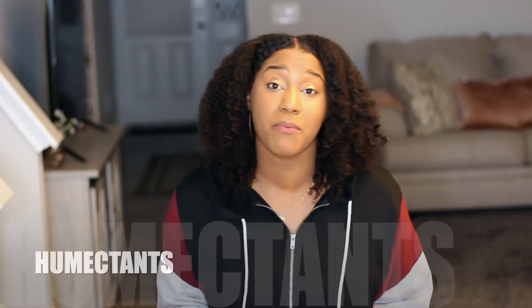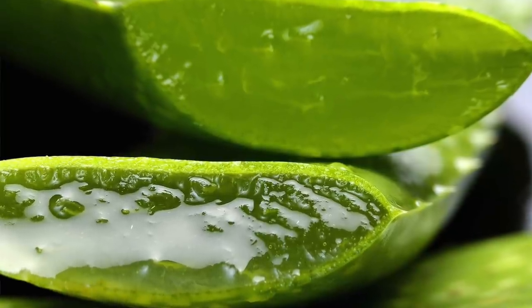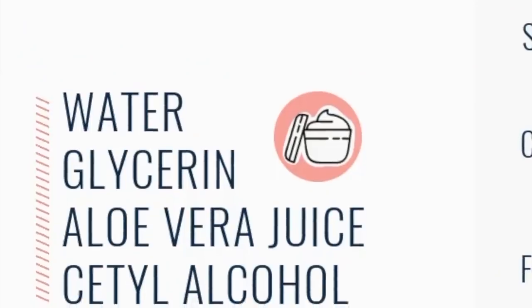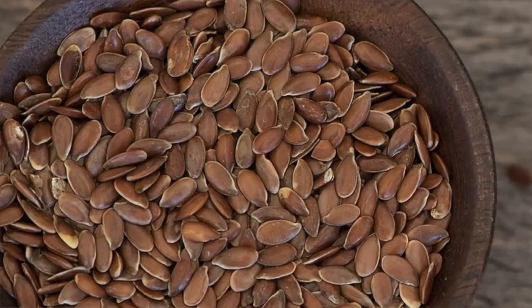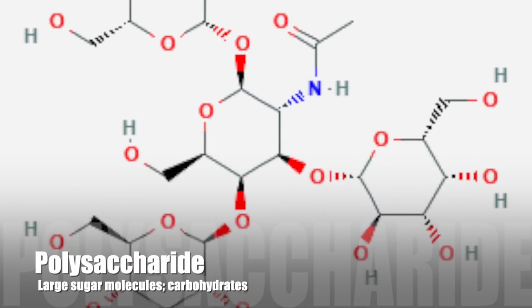Number two: consider using humectants in your regimen, like aloe vera juice. It's amazing because not only is it a humectant, but it's also acidic, so it's ideal for our hair — it softens, brings shine, and moisturizes. Make sure it's at least within the first four or five ingredients on the ingredient list to ensure you're getting enough of it. Also look for mucilage-like humectants like flaxseed gel, marshmallow root, and slippery elm. Even though they're gooey and great for curl definition, they're also humectants that draw moisture to the hair and contain polysaccharides, which give a nice film-forming, moisturizing layer around the cuticle.